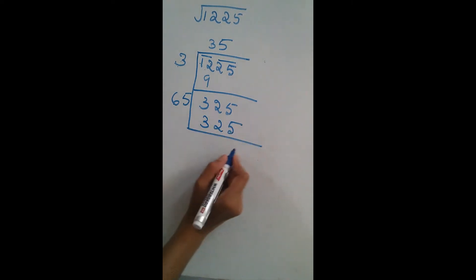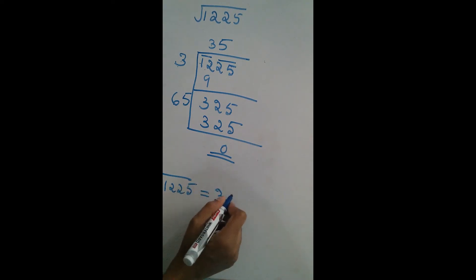That is, if we subtract, we are getting 0. So square root of 1225 is 35. This method is known as division method.